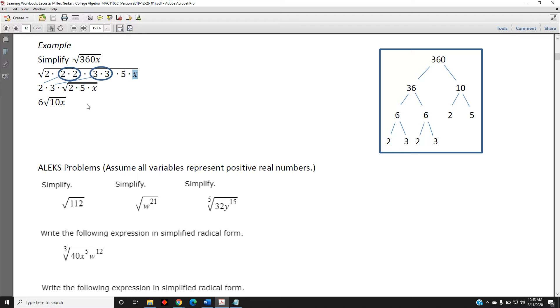Now combine the outside things with the inside things. 2 times 3 is 6. 2 times 5 times x is 10x. So we get our final answer, 6 times the square root of 10x.